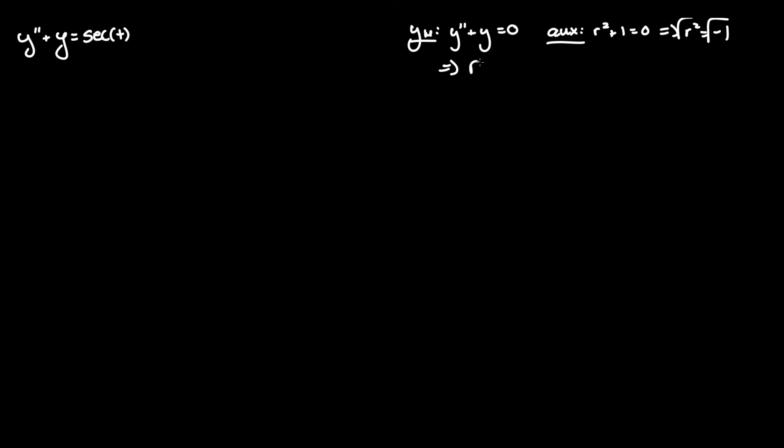We can take the square root to find the two roots of r equal to zero plus or minus i, where alpha h equals zero and beta h equals one.